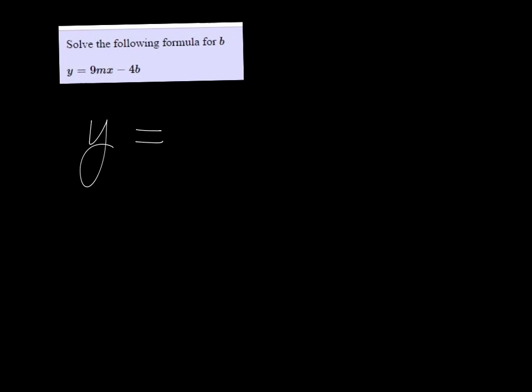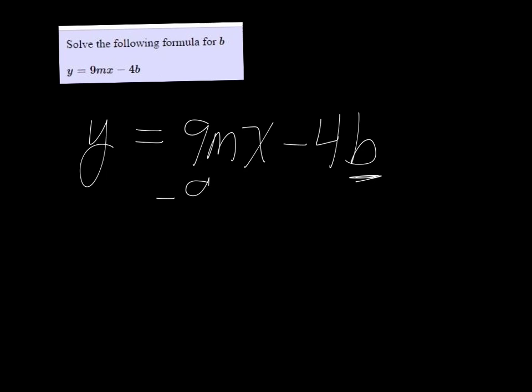We want to solve y equals 9mx minus 4b for b. Let me write out the equation. So we want b by itself. Let's get rid of the 9mx by subtracting it on both sides.